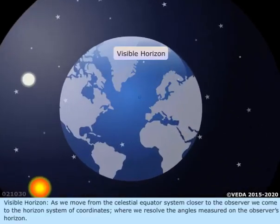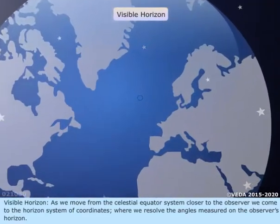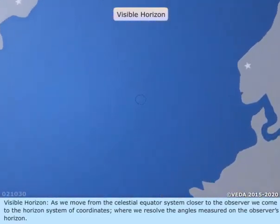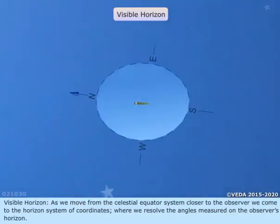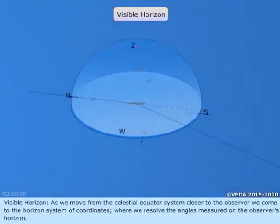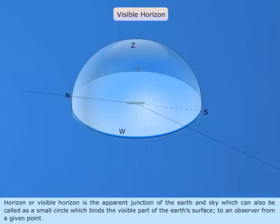As we move from the celestial equator system closer to the observer, we come to the horizon system of coordinates, where we resolve the angle measured on the observer's horizon. Horizon, or visible horizon, is the apparent junction of the Earth and sky, which can also be called a small circle which binds the visible part of the Earth's surface to an observer from a given point.